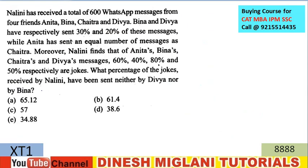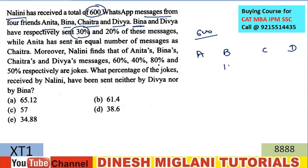Next is a question based on basic percentages. Nalini has received 600 WhatsApp messages from Anita, Beena, Chetra, and Divya. From Beena she gets 30%, which is 180 messages. From Divya she gets 20%, which is 120 messages. That accounts for 300 messages. Since Anita sent equal messages as Chetra, that's 150 each.